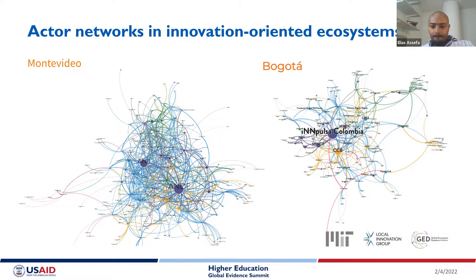A third approach, planned for a different innovation ecosystem study, is to convene a participatory workshop with actors who end up being centrally positioned on the social network maps resulting from the surveys. In these maps — visible from previous studies in Montevideo and Bogota — some nodes are larger and more centrally located. We would convene those central actors to sort the full actor list into three broad buckets: those definitely members of the ecosystem, those definitely not members, and those where it's unclear. This shades-of-gray approach focuses on identifying actors clearly and unambiguously part of the system, rather than getting tied up in exactly where the cutoff line is.